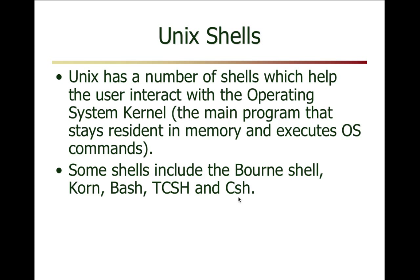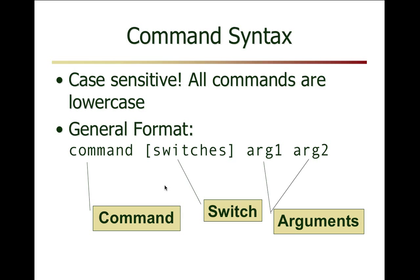We talked about the shell yesterday and looked at different types: Bourne, Bash, and C shell. Picking out the shell and scripting language is key to the configuration of your system. The syntax of all commands looks the same — all commands run the same way. The general format is the command name, then the switches, and then the arguments. For example, CP to copy has the source file and the destination file.